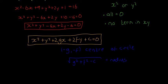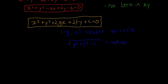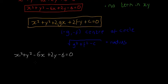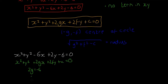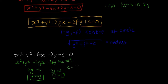For example, looking at the equation x squared plus y squared minus 6x plus 2y minus 6 equals 0, we compare it to x squared plus y squared plus 2gx plus 2fy plus c equals 0. So 2g equals minus 6, meaning g equals minus 3. Then 2f equals 2, so f equals 1. And c equals minus 6.